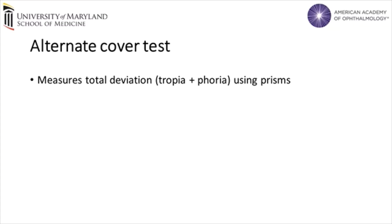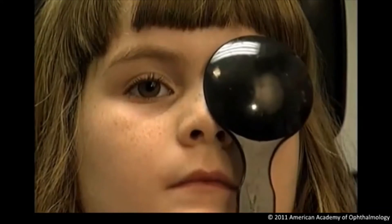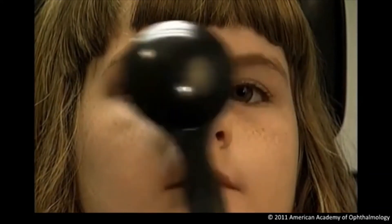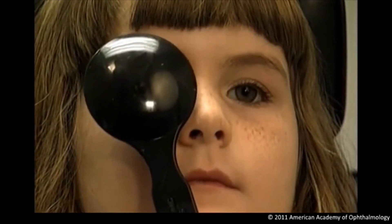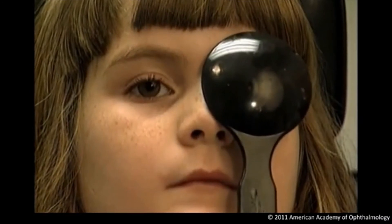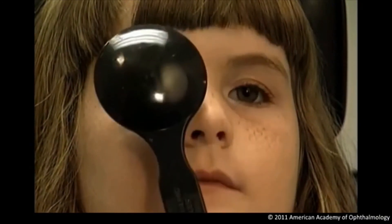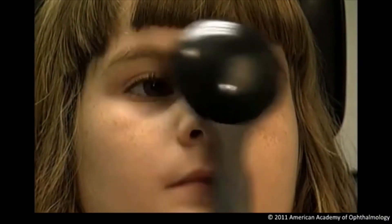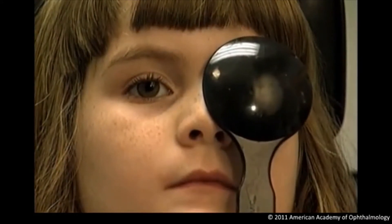The alternate cover test measures the total deviation of tropia and phoria using prisms. For this test, the patient fixates on a point straight ahead while the examiner alternates back and forth occluding each eye, moving rapidly but making sure the non-occluded eye refixates on the point before alternating.